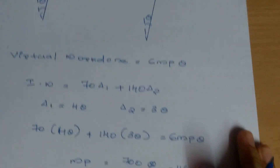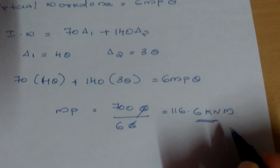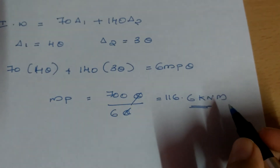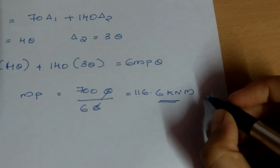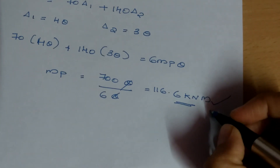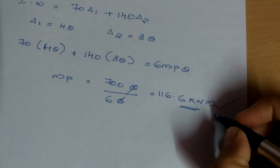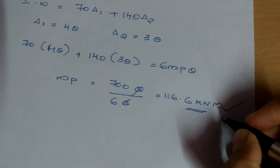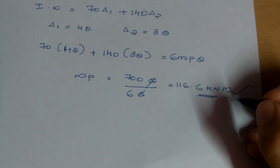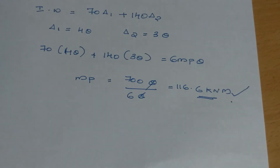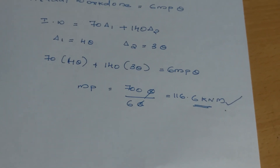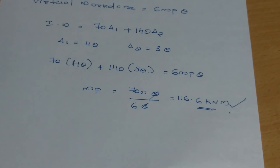In the combined mechanism, the plastic moment capacity is maximum at 116.6 kN·m, so this is the real governing mechanism we adopt. Thank you for watching — please subscribe for more videos.